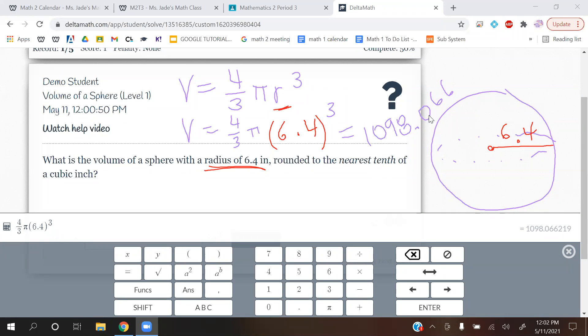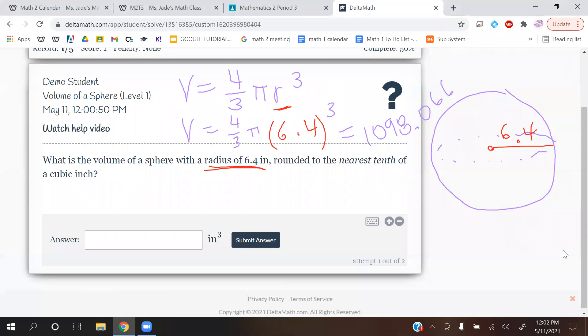This is the number we're going to keep or change. And then looking after that, it's a 6. 6 is a big number. So the 0 gets rounded up to a 1. So we got 1098.1.